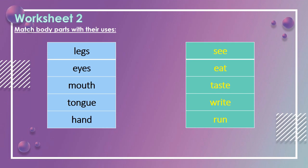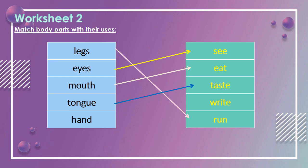Going to worksheet two. Match the body parts with their uses. On the left hand side we can see body parts: legs, eyes, mouth, tongue, hand. On the right hand side we can see functions: see, eat, taste, write, run. Legs is to run. Eyes is to see. Mouth is to eat. Tongue is to taste. Hand is to write.